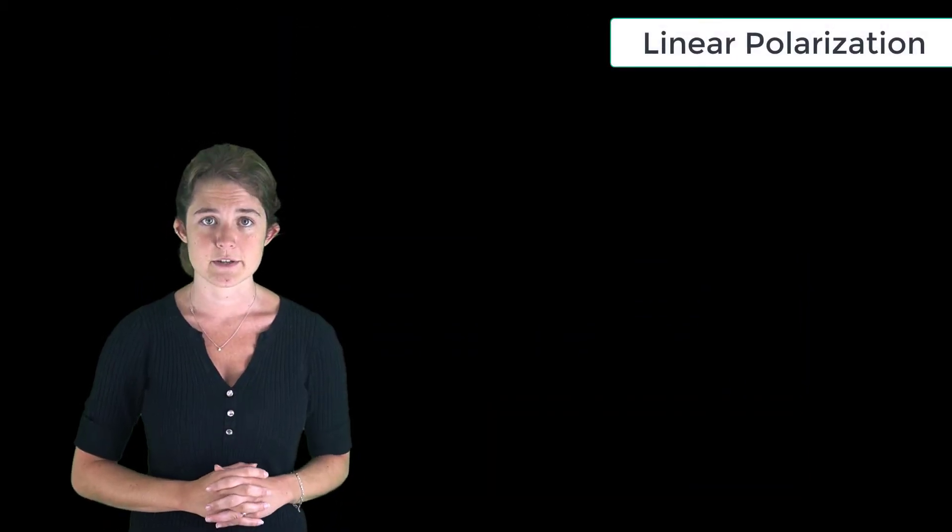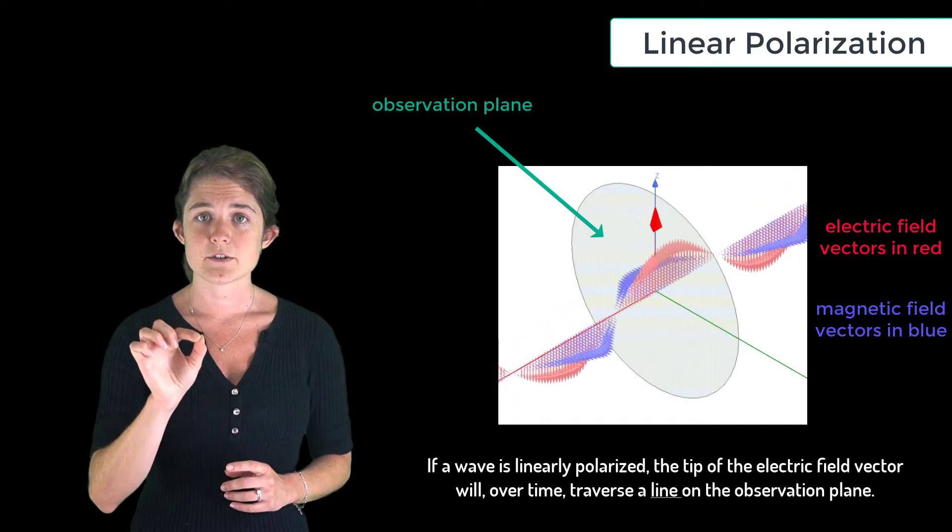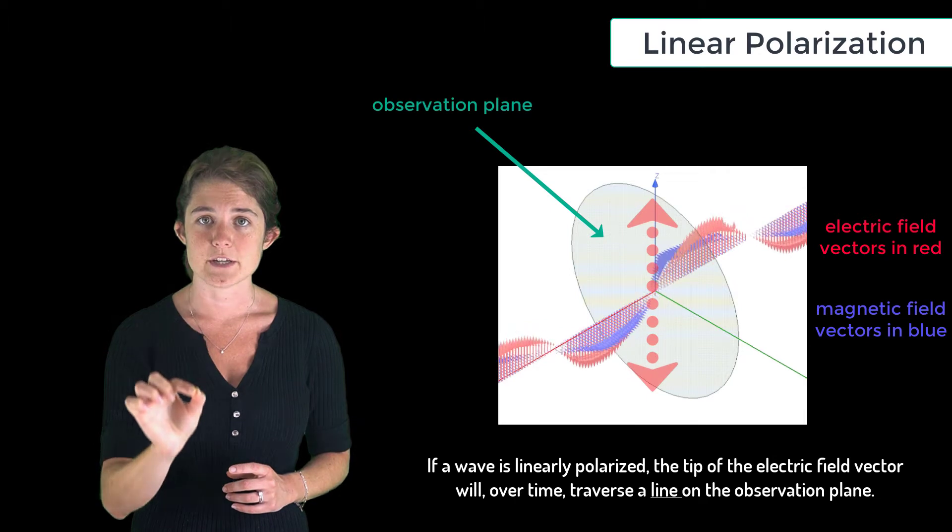First, let's look at linear polarization. If a wave is linearly polarized, the tip of the electric field vector will traverse a line on the observation plane.